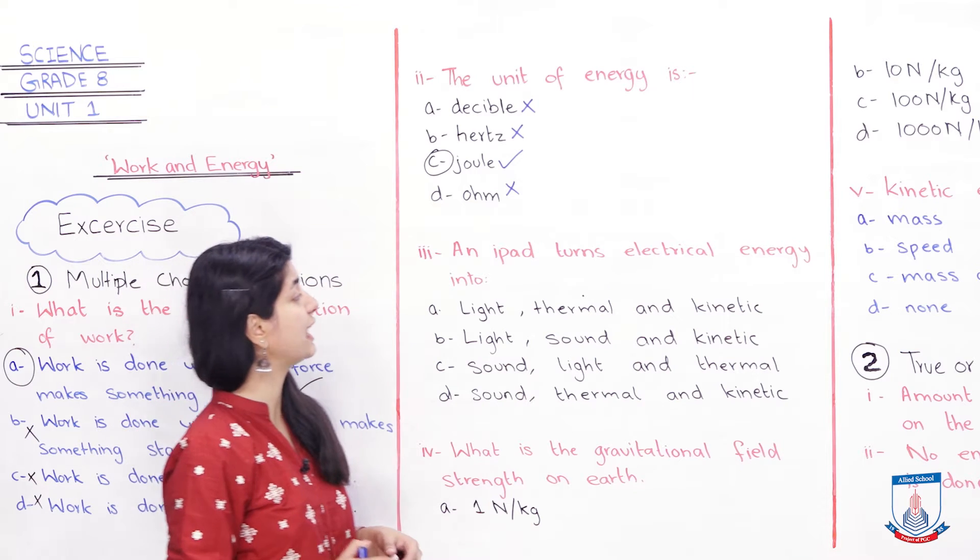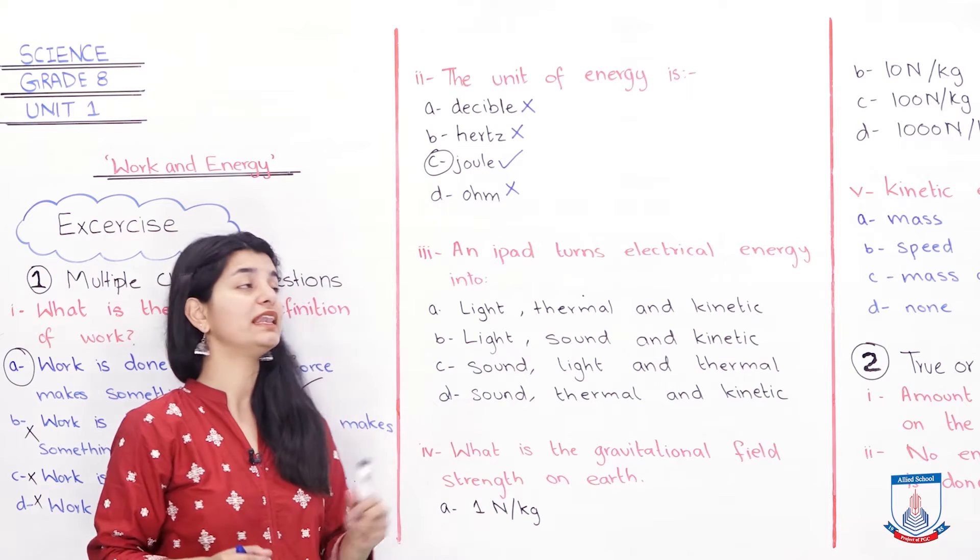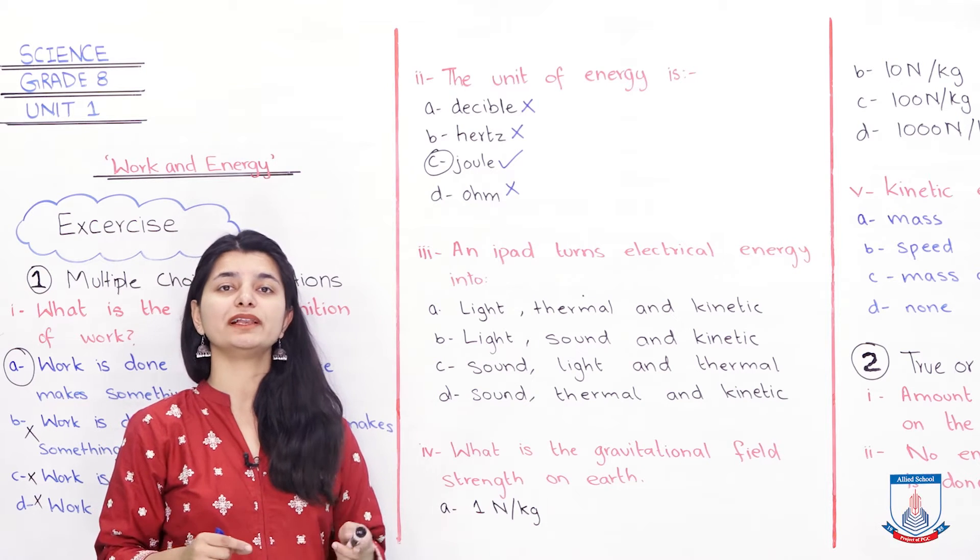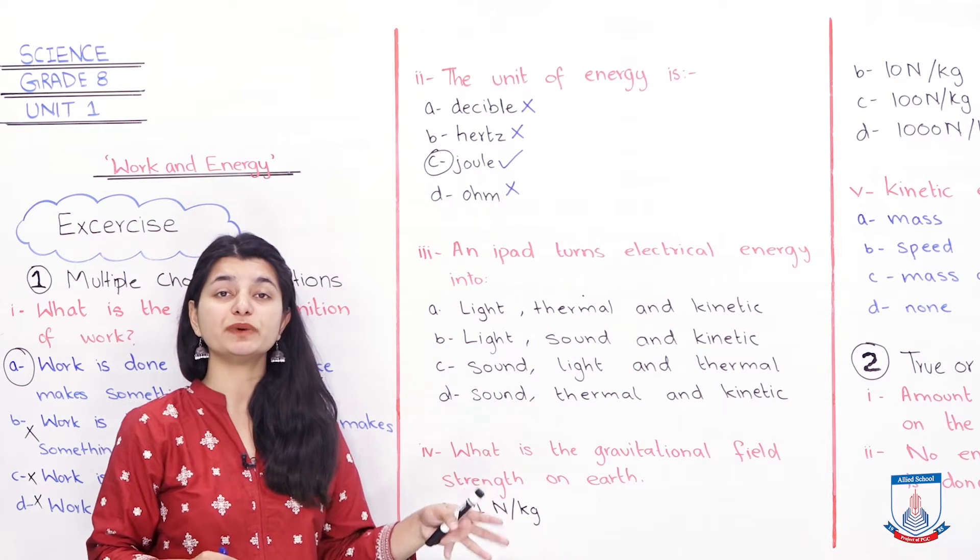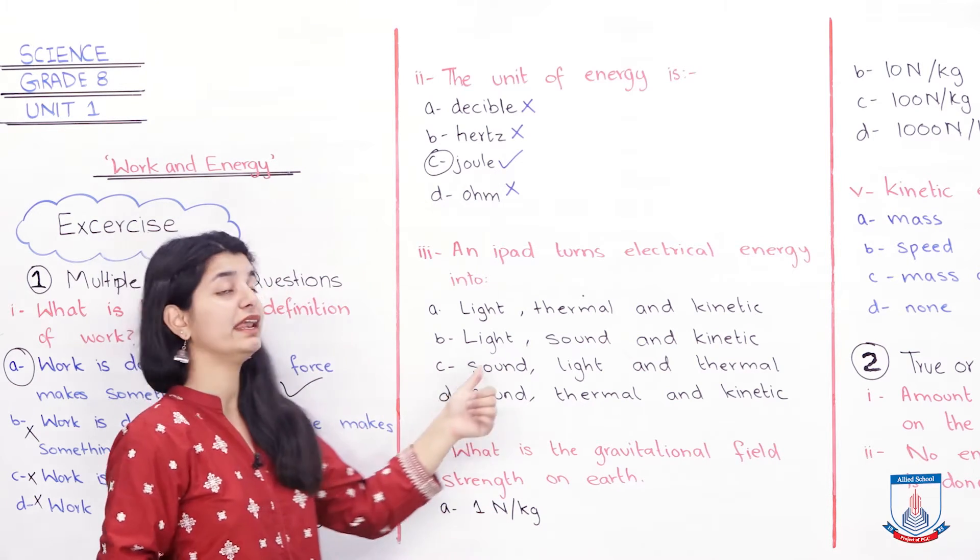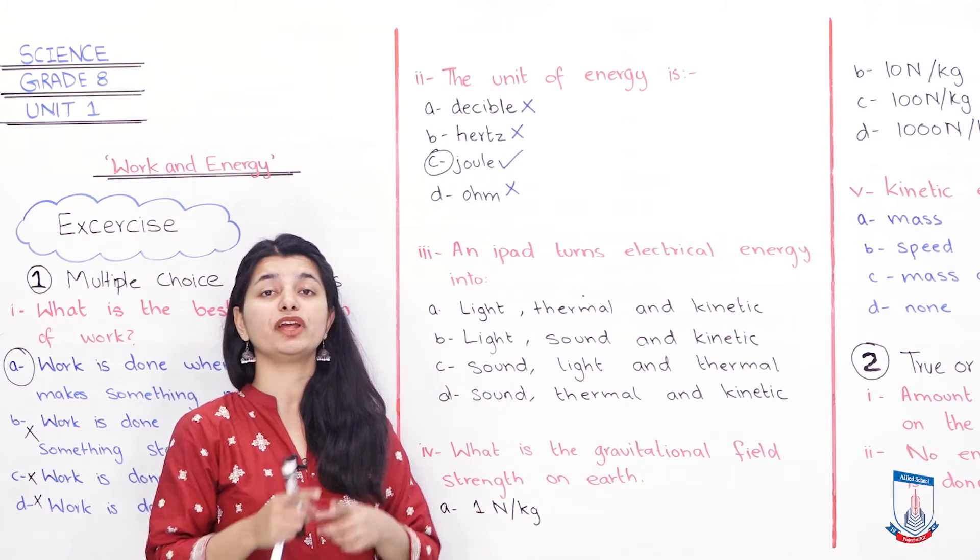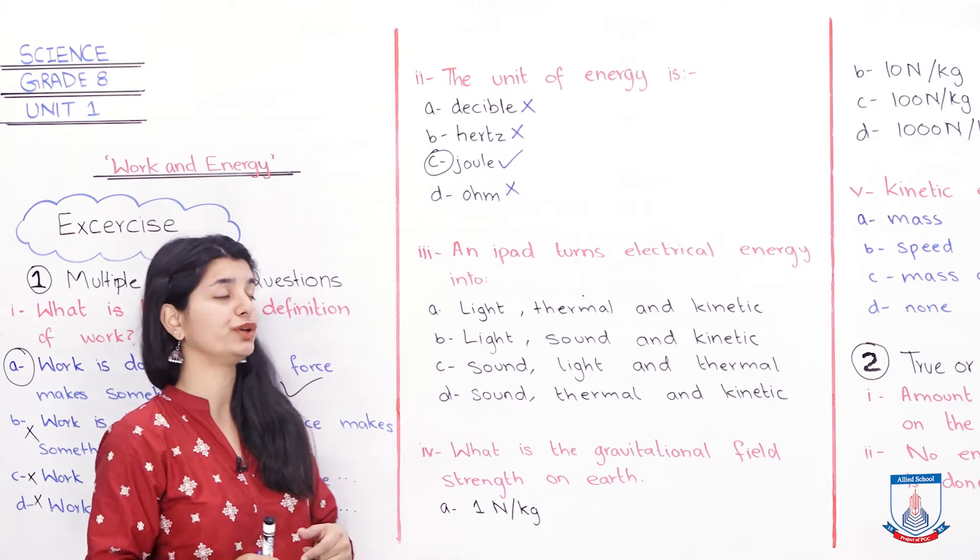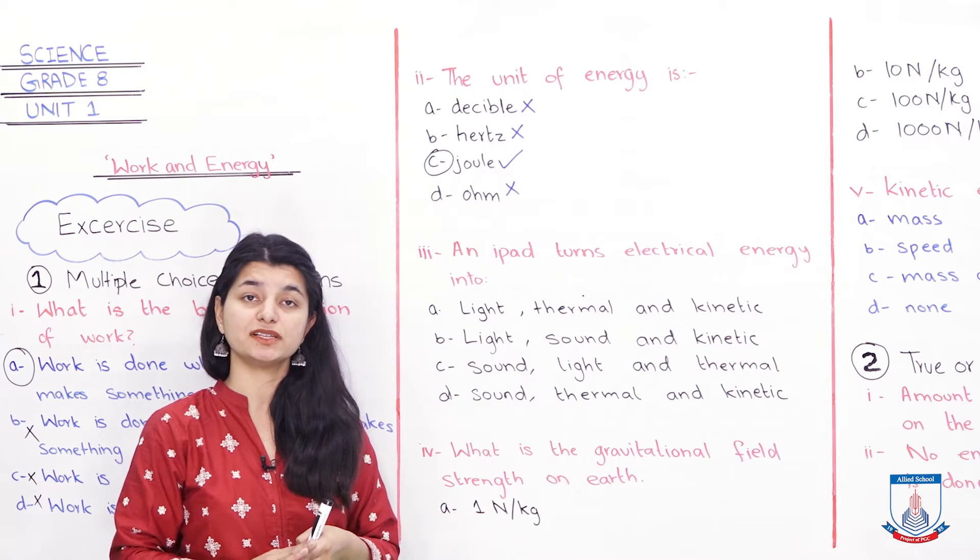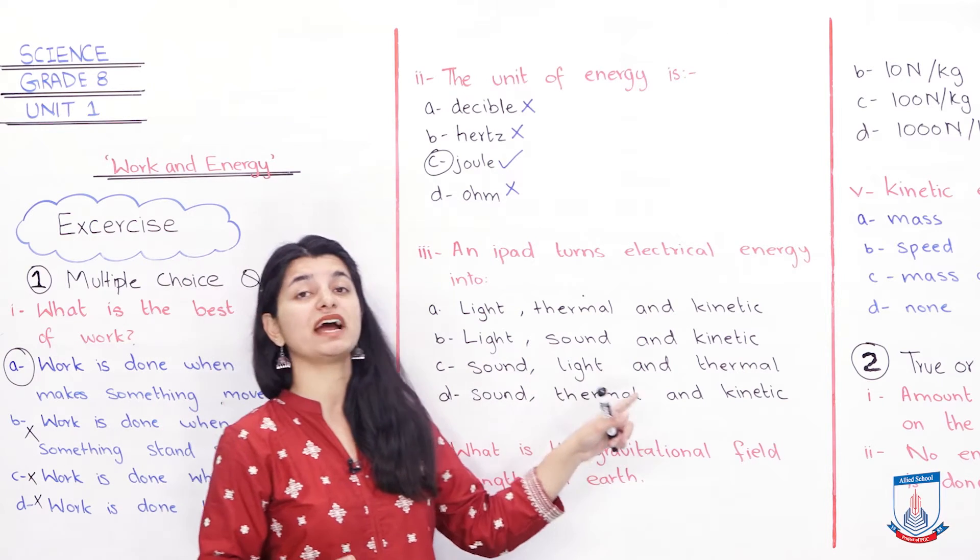An iPad turns electrical energy into... an iPad which is a device which is like a tablet which you may have seen, it converts electrical energy into which energy? Obviously, you operate it with electrical energy, you connect it with a power switch, and then it converts energy into which energy. Light energy? Yes, it definitely does. Why? Because you look at light from it. When you look at the screen, light is used. Thermal energy? Yes, thermal energy is used. Why? Because it gets warm after a certain point. Heat energy is constantly loose.